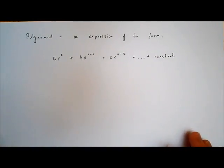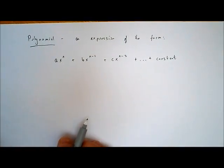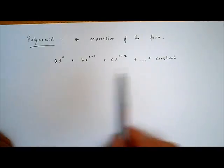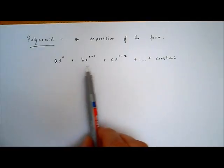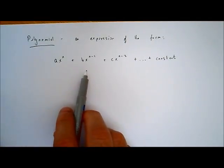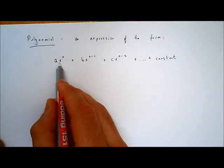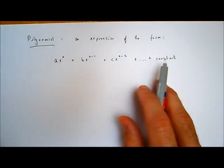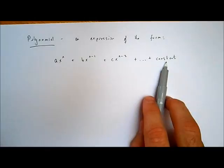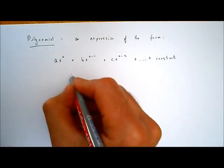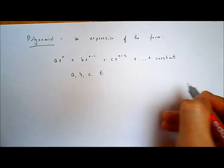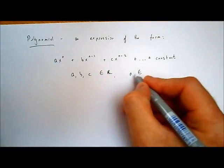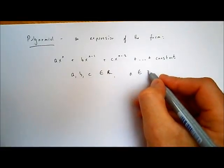That leads us to the definition of a polynomial. You would have used polynomials a lot. A polynomial is an expression of the form ax to the power of n, plus b times x to the power of n minus 1, plus c times x to the power of n minus 2, all the way down to a constant at the end — which might be 0. In this expression, a, b, and c are all real numbers, and the values of n — the powers — all have to be whole numbers.